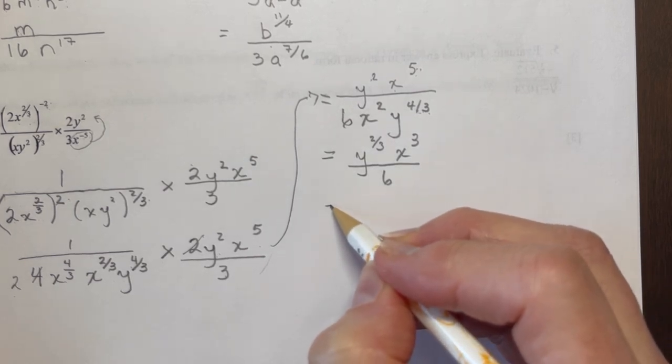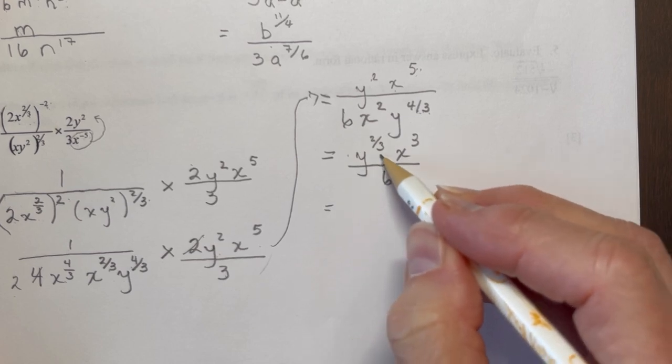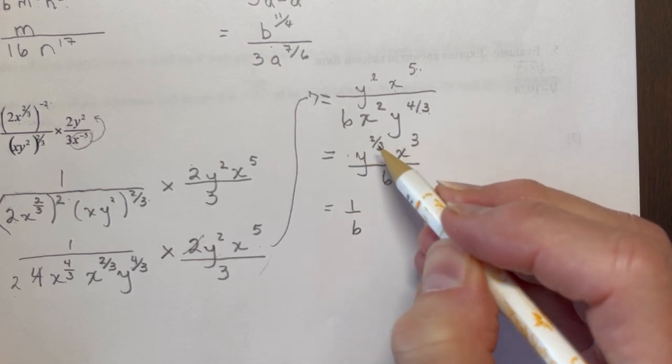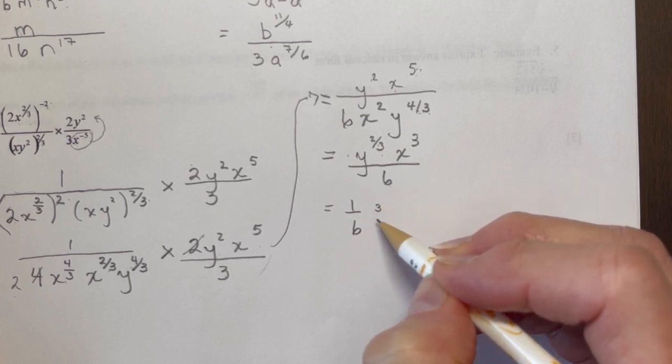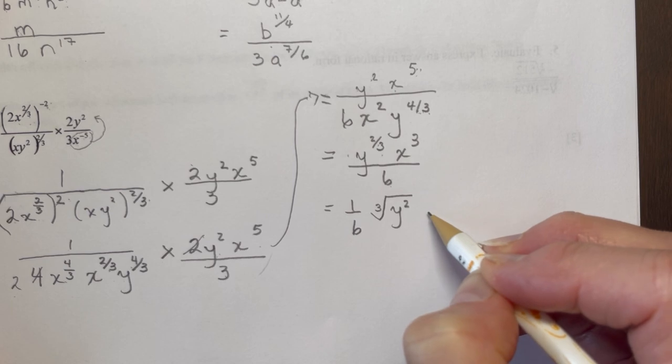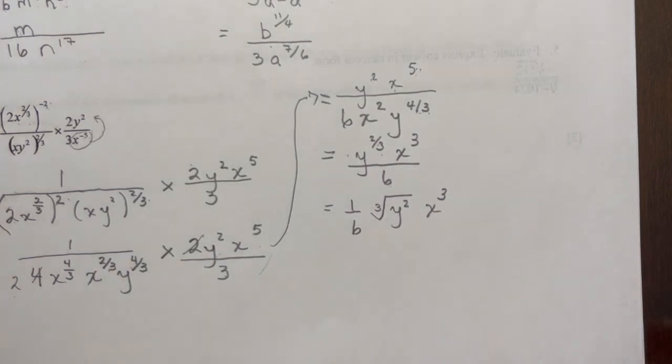Okay, now I could write this in a radical form, because I could pull out this. This is one over six, right? You can put that up front. And y to the two-thirds would be the cube root of y squared, and then x cubed. That might be a very fancy, lovely answer.